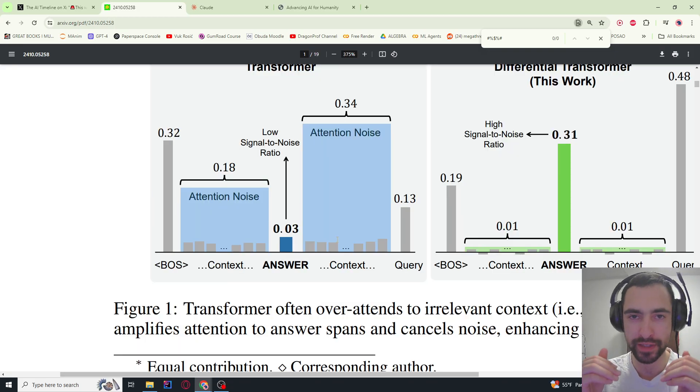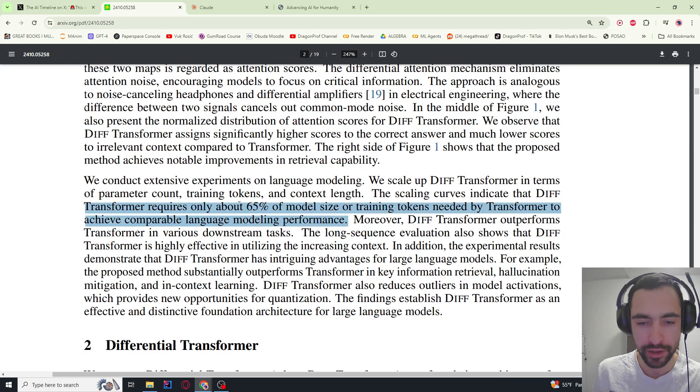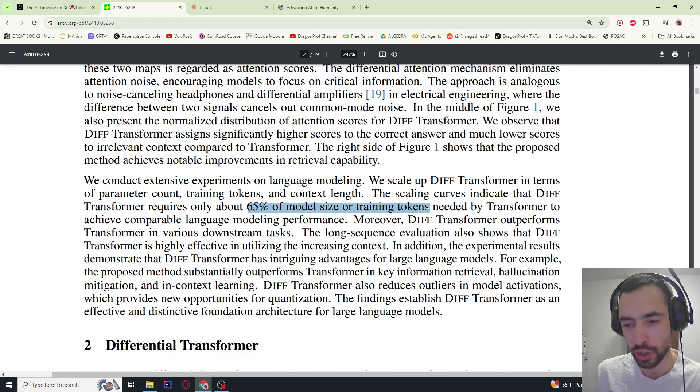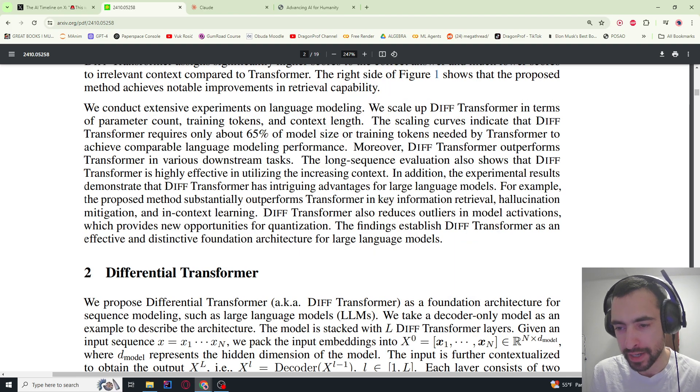The main purpose is to find out how to cancel out attention scores for irrelevant texts so that only the relevant text is left and its attention is amplified. The query gives attention only to the relevant text and cancels out attention to irrelevant text. They claim this method only requires 65% of model size and training tokens to achieve the same performance in large language models as traditional transformers. So they just made transformers 35% easier to make.